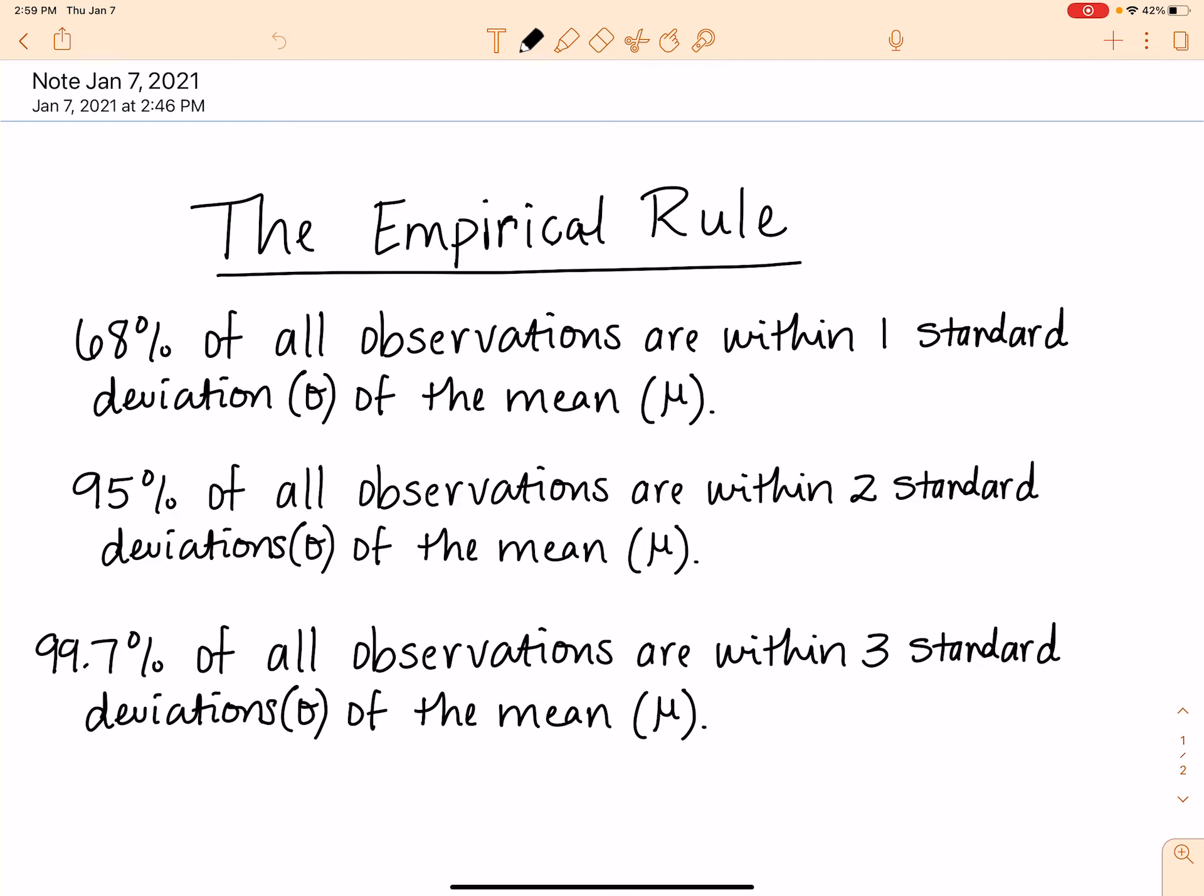The fact that this only applies to the normal distribution, so a normal distribution only. In other words, if you have like a binomial distribution or a geometric distribution, any other distribution, this is not going to work for. So this only works for normal.